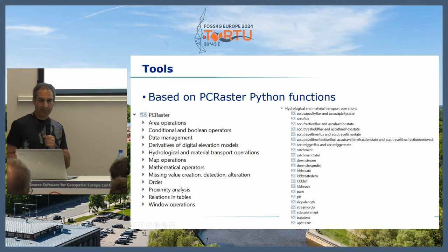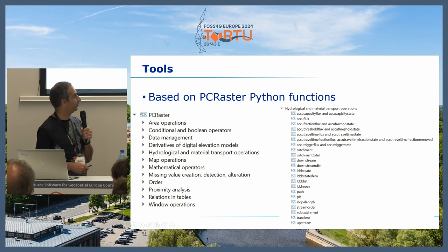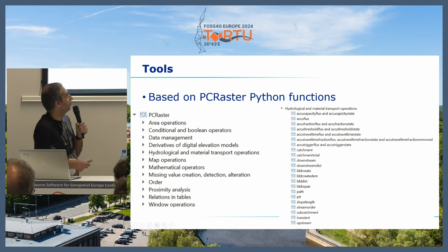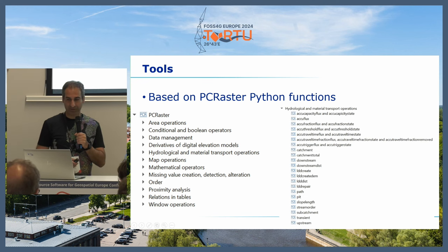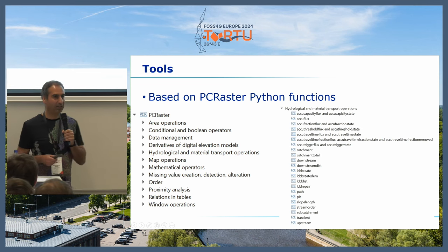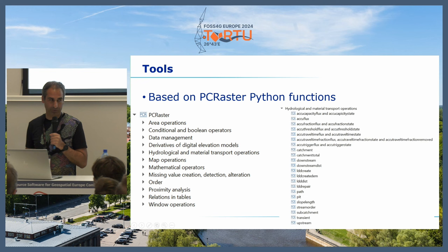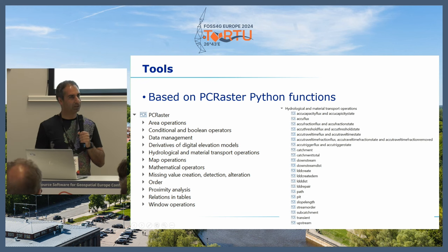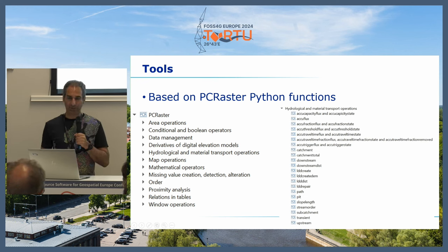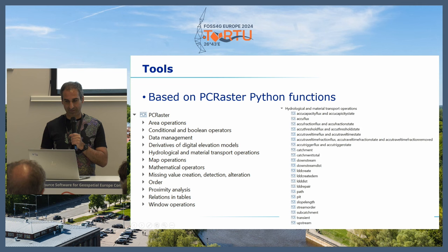This is how it looks in your processing toolbox. There are all kinds of operations, but for hydrology the hydrological and material transport operations are very useful. The names of all these tools are exactly the same as their Python functions in the PCRaster Python framework. So didactically, when people get used to making graphical models or using the tools in QGIS, they can easily step up to Python programming if they need to.